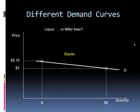Let's take a quick look at this demand curve. When the price falls from $3.10 down to $3, people dramatically increase their purchases — this is a fairly elastic demand curve. Does this reflect the demand for all liquor overall, or just for Miller beer? If the price of Miller beer goes up, there are quite a few substitutes available. But if the price of all liquor goes up, there's not a whole lot of substitutes — so this elastic curve describes Miller beer, not all liquor.